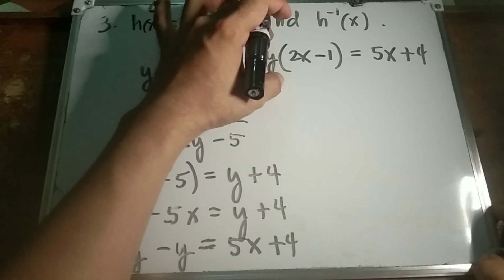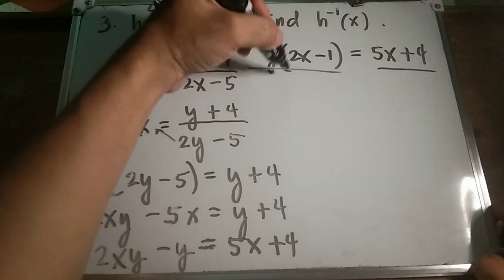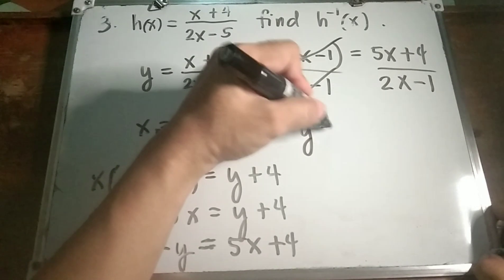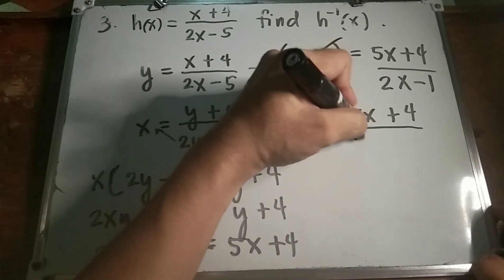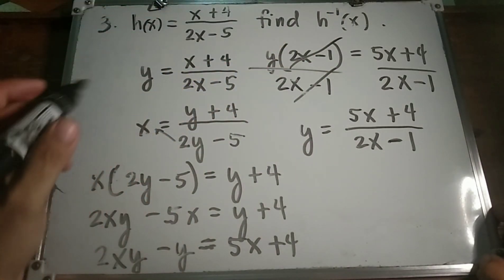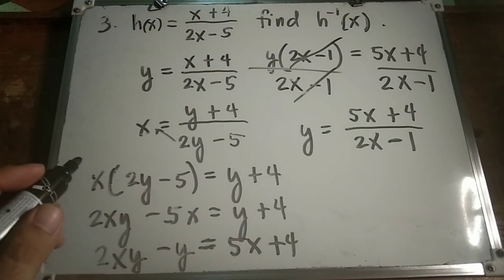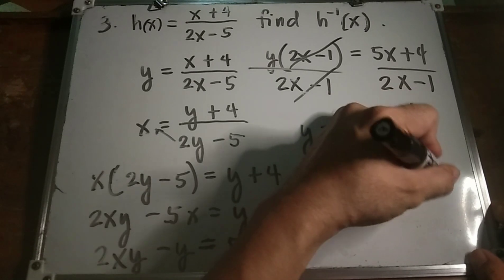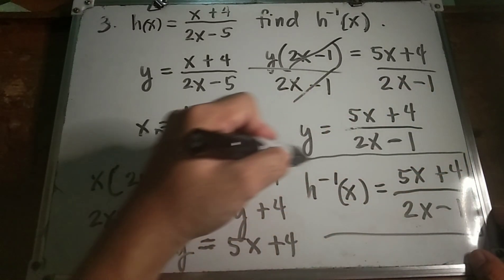Now solve for y in terms of x by dividing both sides by 2x minus 1. So y equals 5x plus 4 over 2x minus 1. Then replace y with the inverse function notation: the inverse function of h of x is equal to 5x plus 4 over 2x minus 1. This is our final answer.